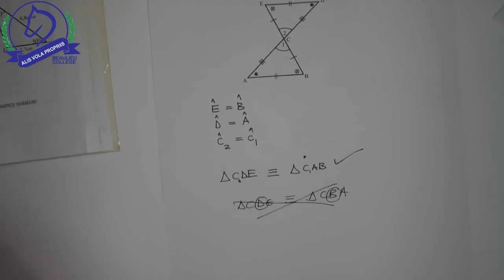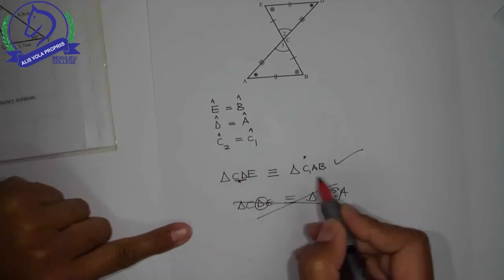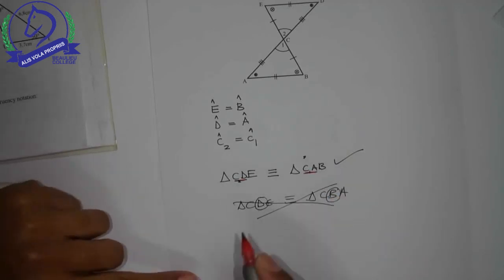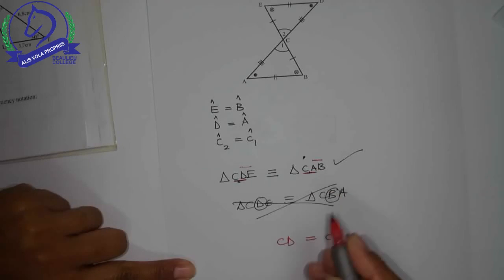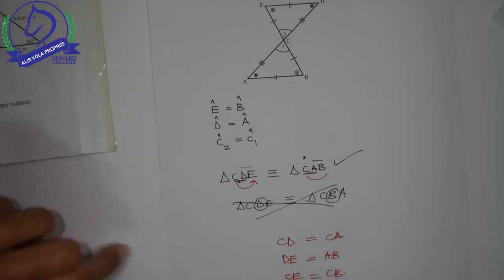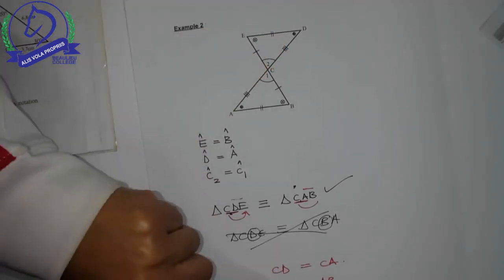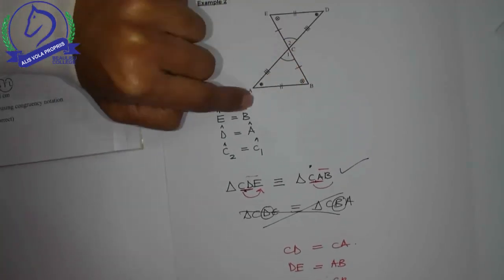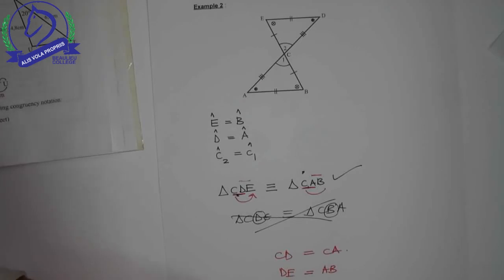That is the correct way of naming the triangles. Now let's list the sides that will be equal based on this correct naming. Two letters together give you the side. So CD - is CD equal to CA? Then DE is equal to AB. And CE is equal to CB. Let's look at the diagram: CD has three little lines, is it equal to CA? Yes. DE equals AB? Yes. And is CE equal to CB? Yes. So again, if you name your triangles correctly, you can get your equal sides from there.